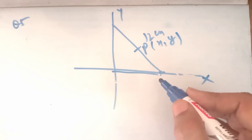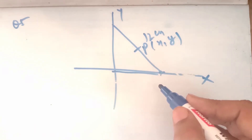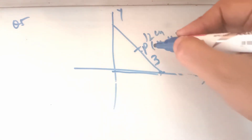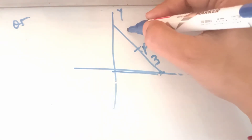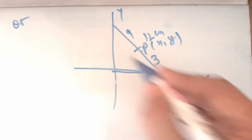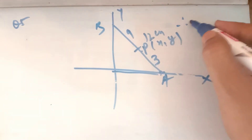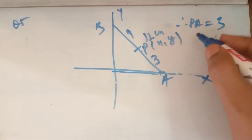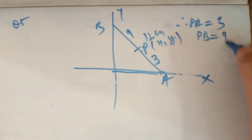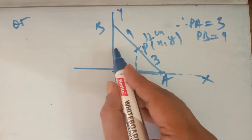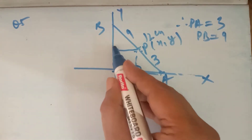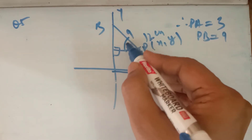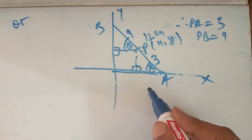यहां से यहां तक 3 है, so this distance = 9. Let A point और B point मान लिया। P is at distance 3 from A and 9 from B. If we draw perpendiculars on the X-axis and Y-axis and this angle is theta, then naturally this angle will also be equal to theta (corresponding angles).